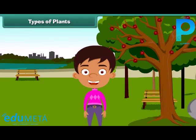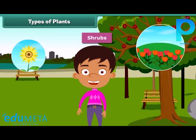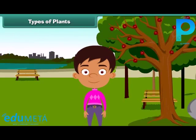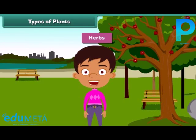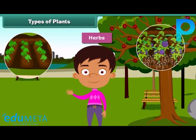Plants which are smaller than trees are called shrubs, such as rose and sunflower plant. Besides, some plants are very small and are called herbs. Brinjal and spinach are examples of herbs.